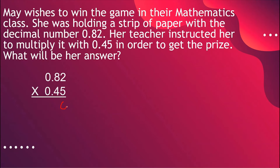Five times two is ten — write zero, carry one. Five times eight is 40, plus one is 41. Five times zero is zero. For the second number: four times two is eight. Four times eight is 32 — carry three. Four times zero is zero — bring down three. For the last row: zero times two is zero, zero times eight is zero, zero times zero is zero.